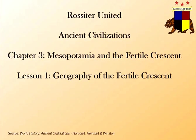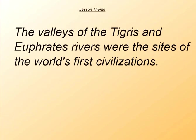Welcome to Chapter 3 of Ancient Civilizations. We're going to start our studies on Mesopotamia and the Fertile Crescent, kind of the start of civilization. This is Lesson 1, the geography of the Fertile Crescent. We want to understand that the valleys of the Tigris and the Euphrates Rivers were the sites of the world's first civilization.